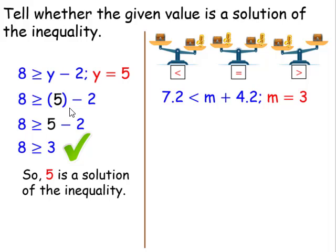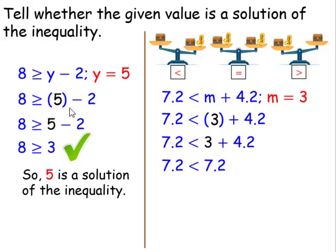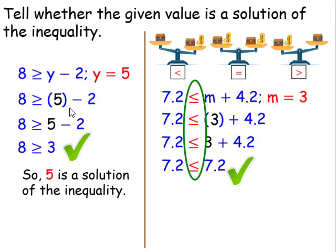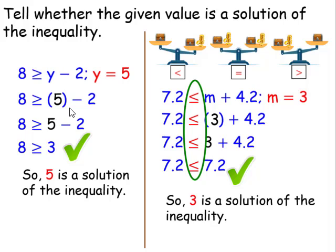Let's take a look at the next example. In this particular case, we're going to substitute 3, n for m. 3 plus 4.2 is 7.2, and a number cannot be less than or greater than itself. Therefore, 7.2 is not less than 7.2. So 3 is not a solution of the inequality. If we replace the inequality symbol with less than or equal to, now it would be a true statement. But in our case, it didn't have the equal to, so it's not a solution.